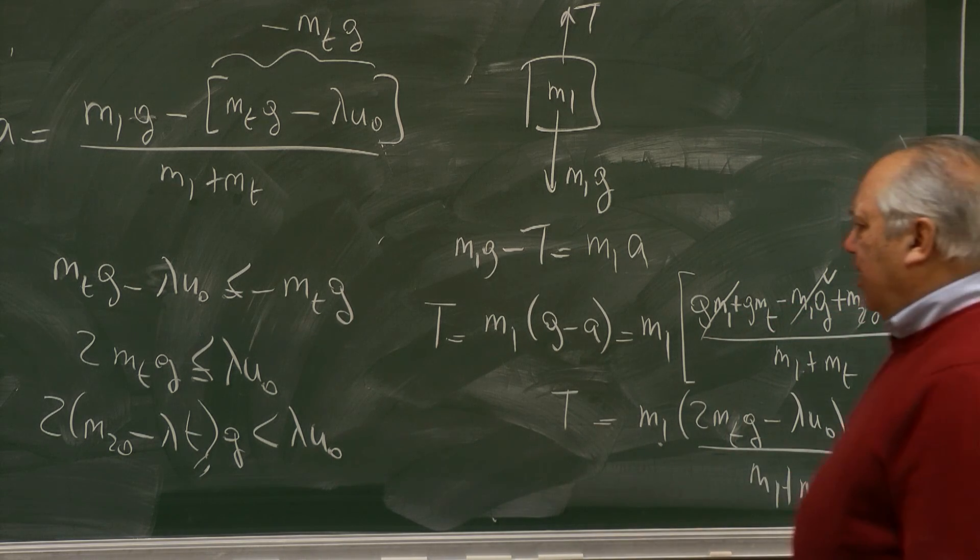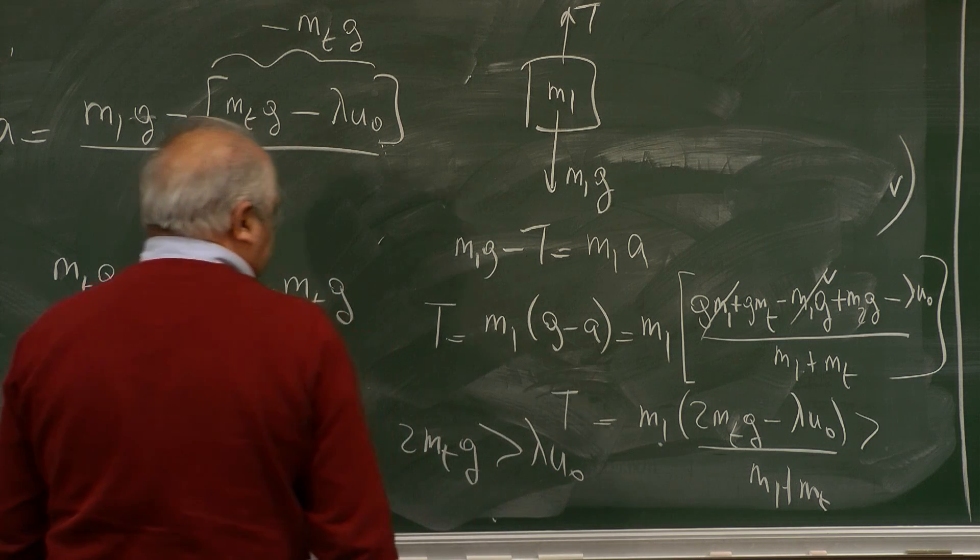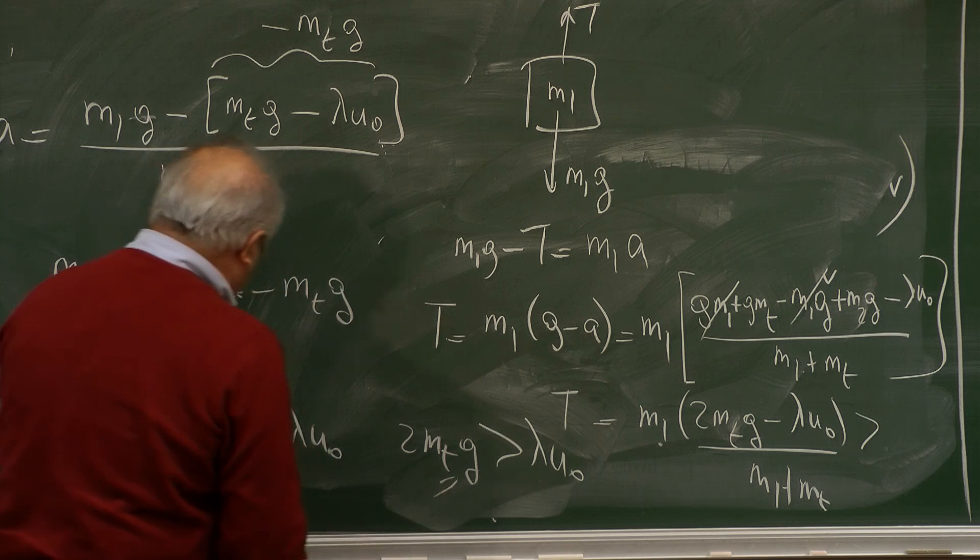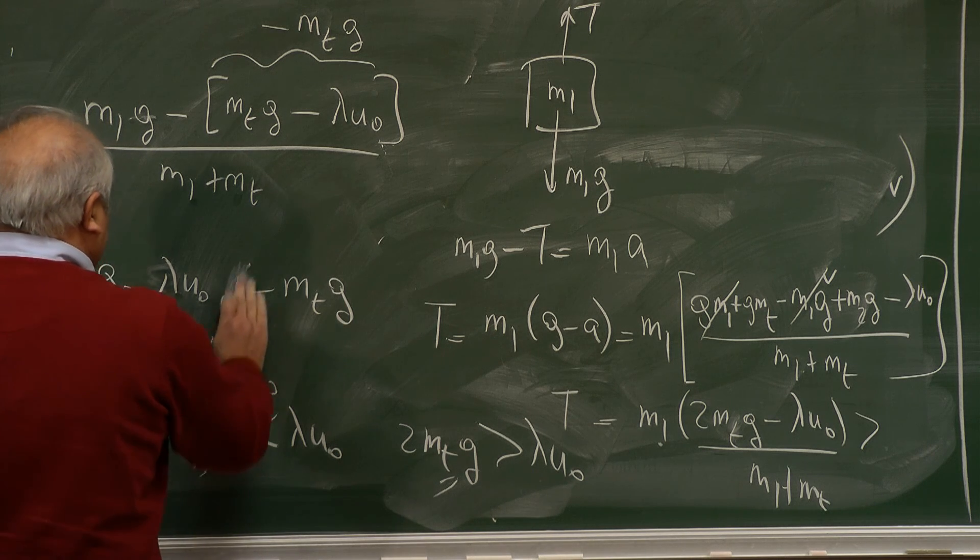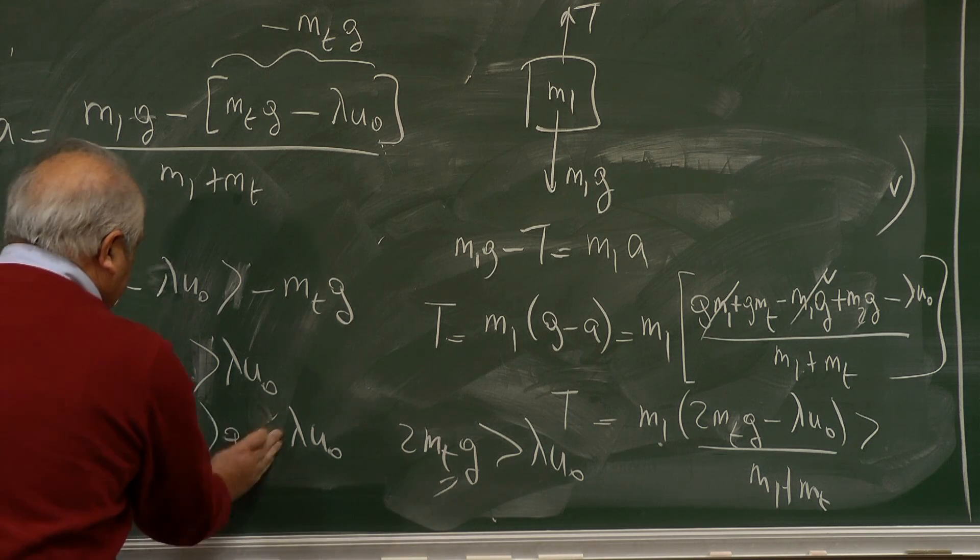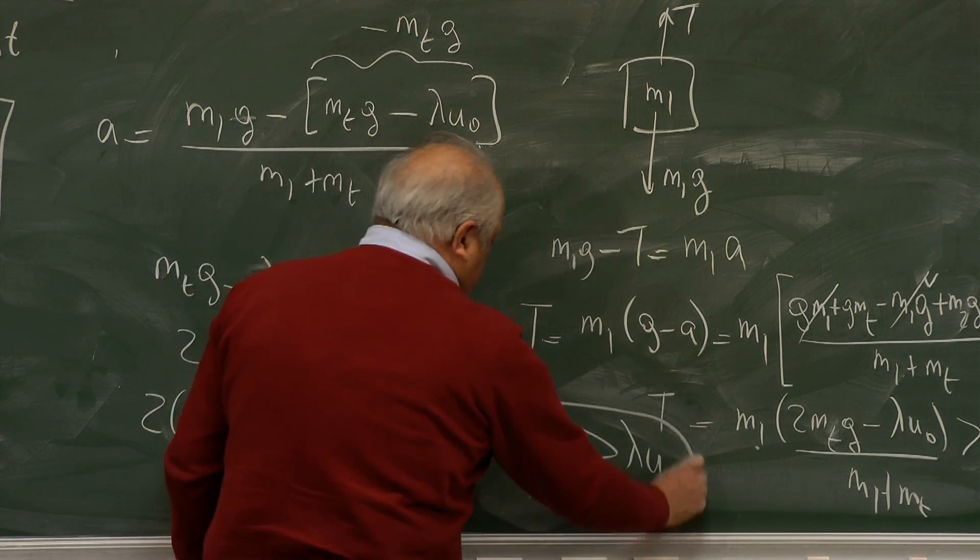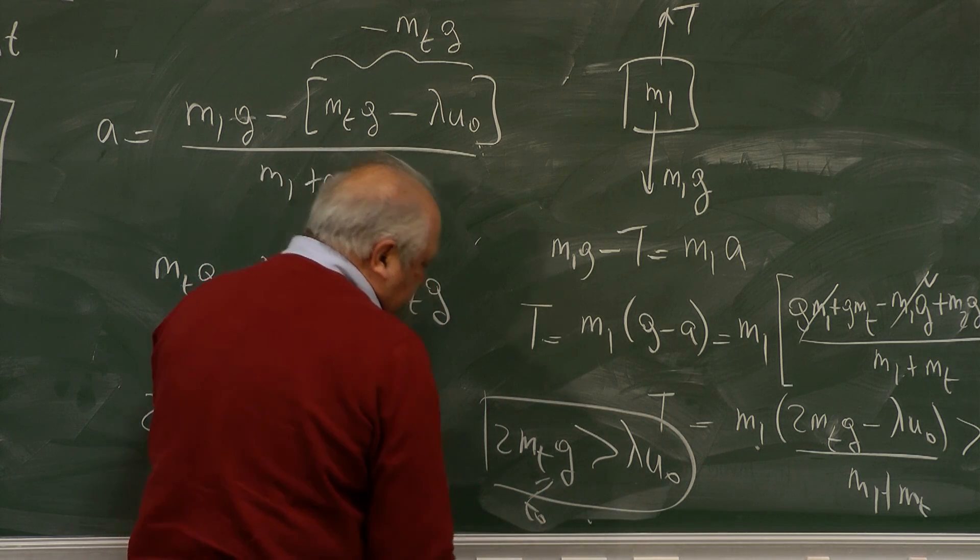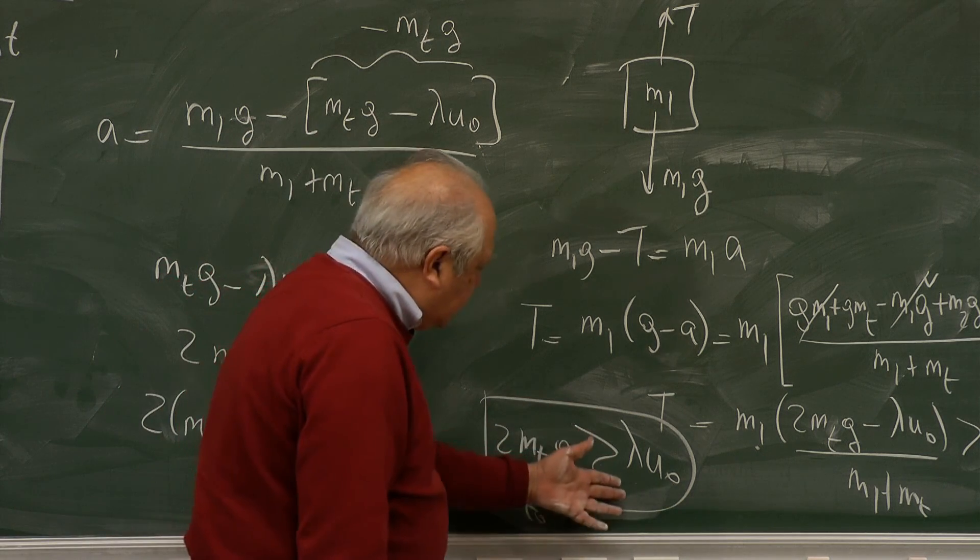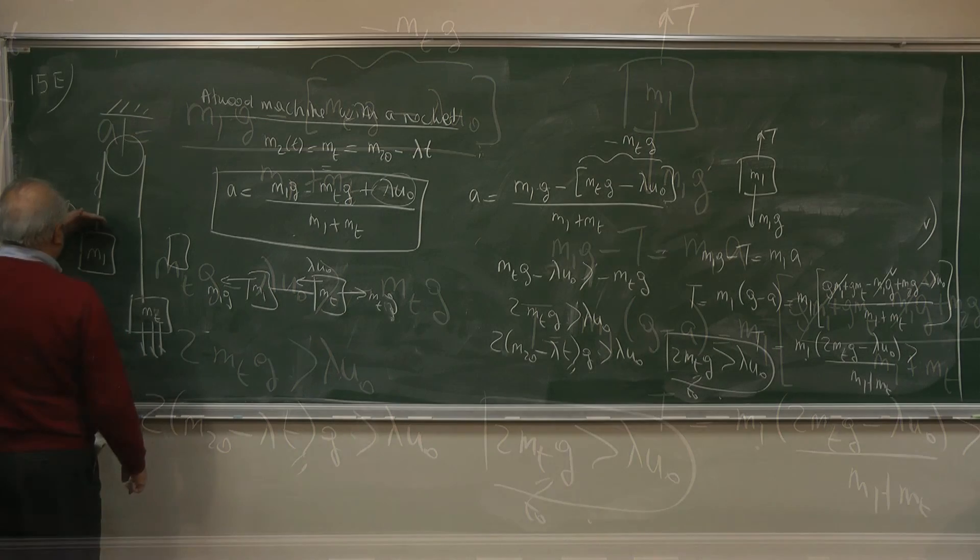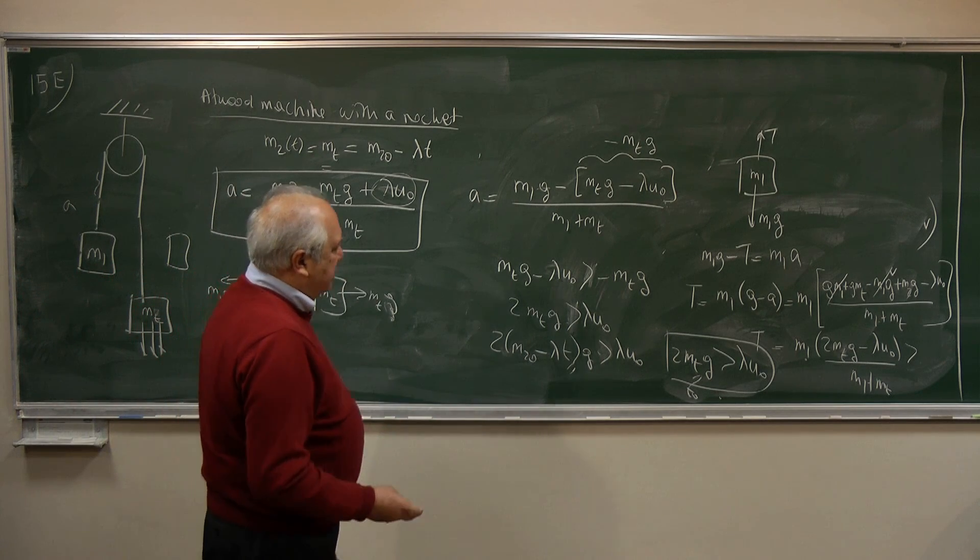Namely, M2 G must be larger than lambda U0. So if that condition, you see, M2 is getting lower and lower. Let me correct this one. So this is getting lower and lower, and there will come a time T0 perhaps. This is no longer satisfied, and in that case, this is falling with G and it is accelerating up by itself because there is no tension.